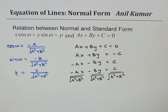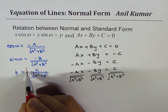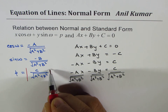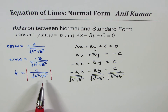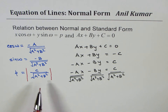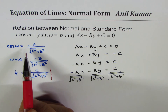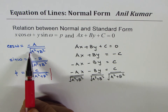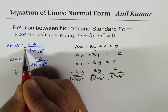To be safe, we always keep p positive. At times the square root can be plus or minus, so the answer could be plus or minus depending on the situation.